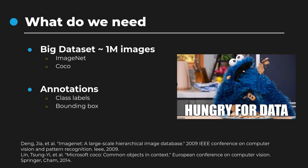But to achieve state-of-the-art performances, independently of the model, it is mandatory to have data — a lot of data. Without large datasets containing millions of annotated images, such as COCO or ImageNet, none of the presented networks would have reached state-of-the-art performances. But collecting and annotating such amounts of images is time-consuming, as it is done by humans, and has to be repeated for each new class or object in a new environment.